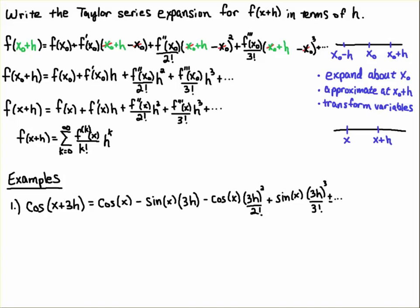If you want to see an example, here is cosine of x plus three h. So here we just get the cosine, because remember, that's just a function back again. X is, again, the expansion point. If you'd like, you could think of that as x naught, or the number at which you're expanding.